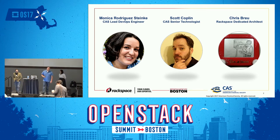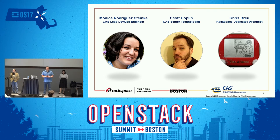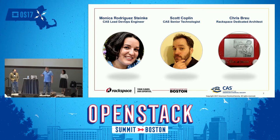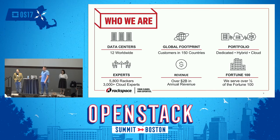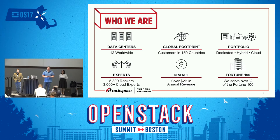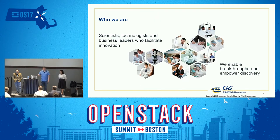My name is Chris Brew. I am a Rackspace dedicated architect working with CAS for about eight months now. In that time, we have pushed the envelope of OpenStack on Liberty. I've done some crazy things, done some awesome things, and as we're about to tell you, done some unfortunate things. A little bit about Rackspace: we have a global footprint in 150 countries with 12 worldwide data centers. We have a portfolio of hybrid, dedicated, and pure cloud. Of the 5,800 rackers, about 3,000 are support-based, so we are heavily influenced from a support standpoint.